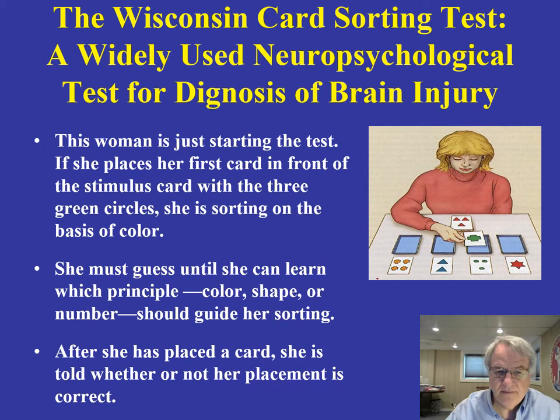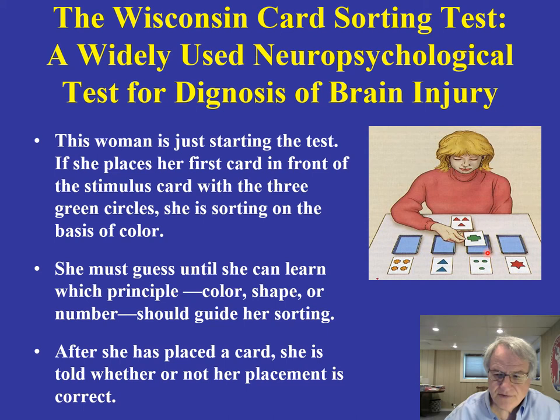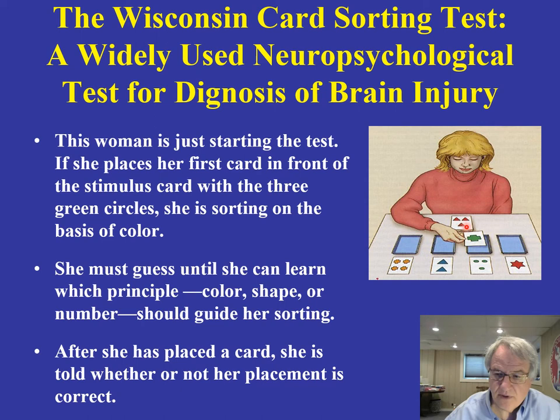You can see here this woman starting this particular test. The test consists of a series of cards that have symbols on them, and the cards are of different colors. In this case, she is sorting on the basis of color. She takes a look at one card at a time — she's holding this one with a green symbol on it right now.